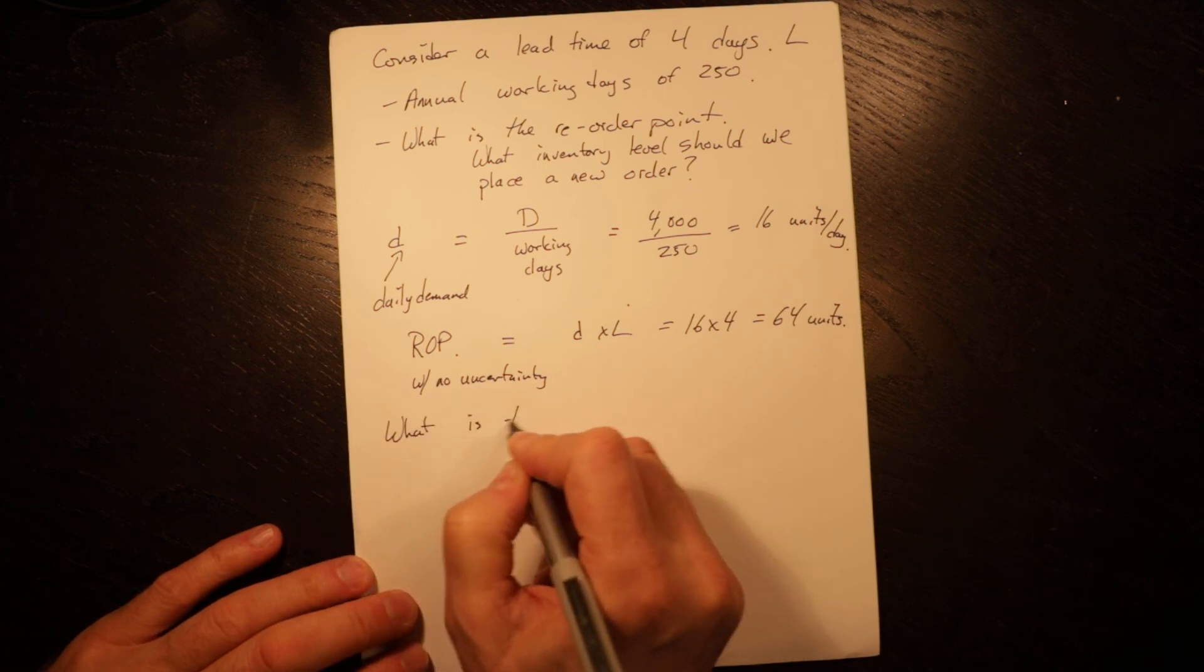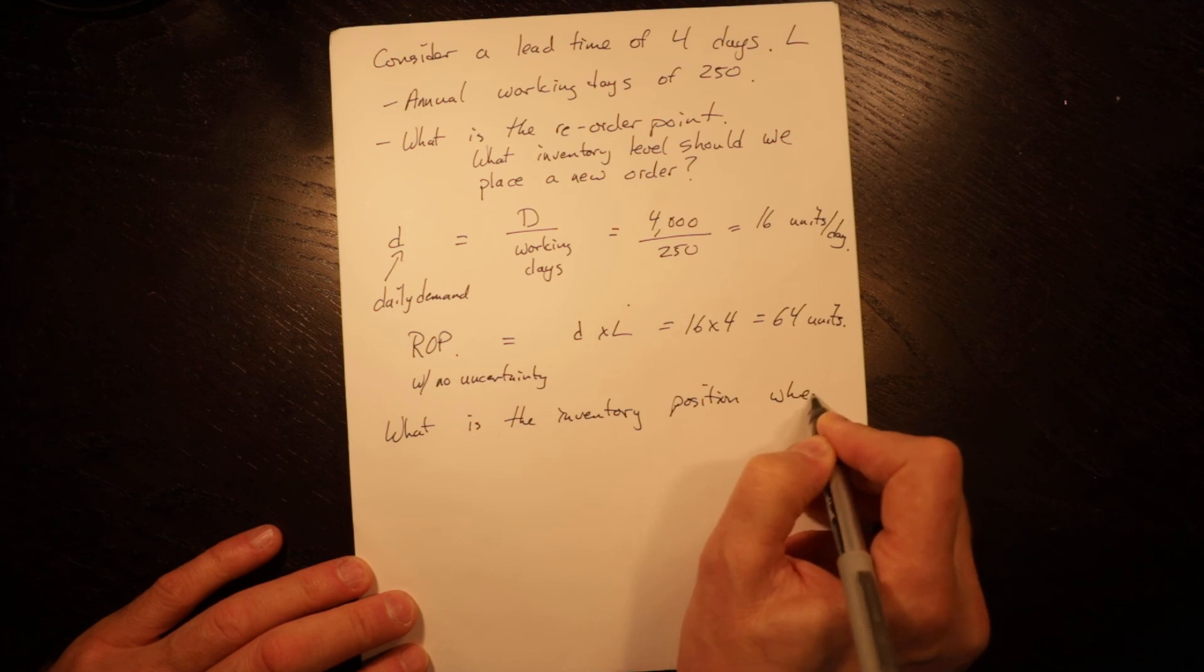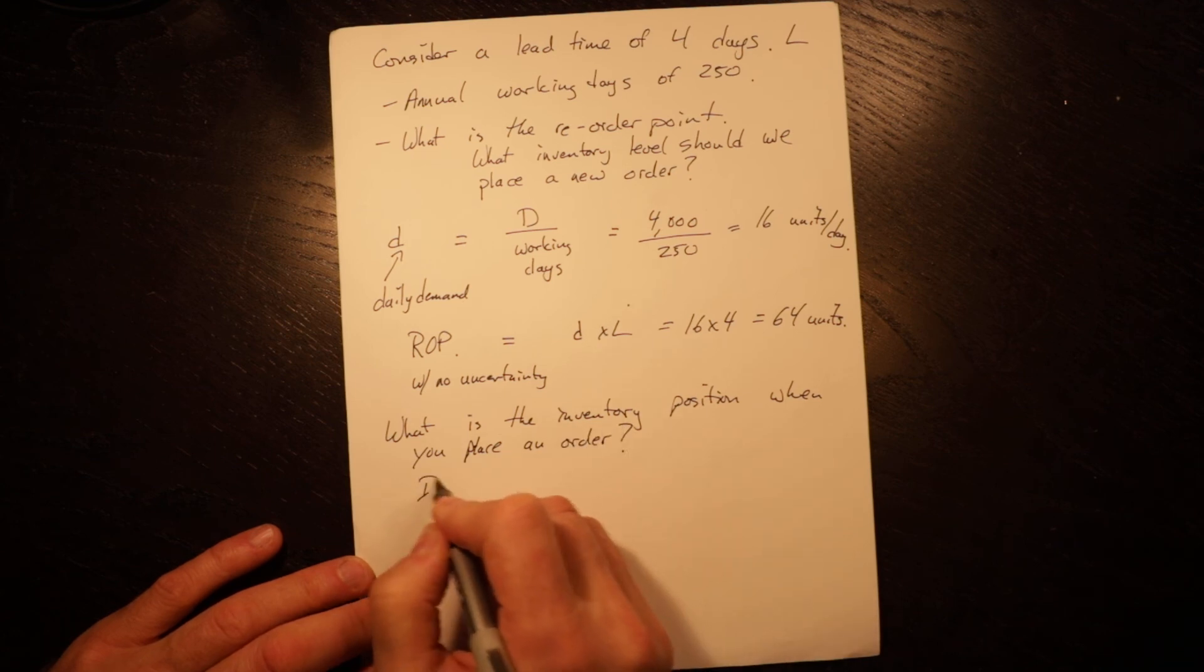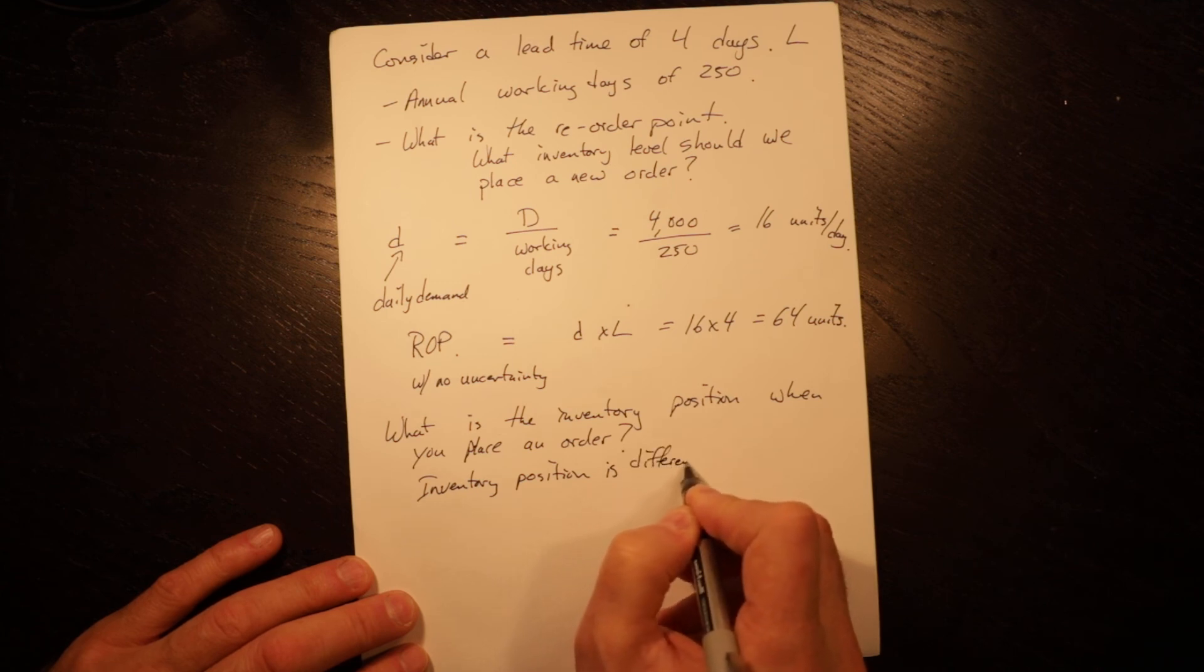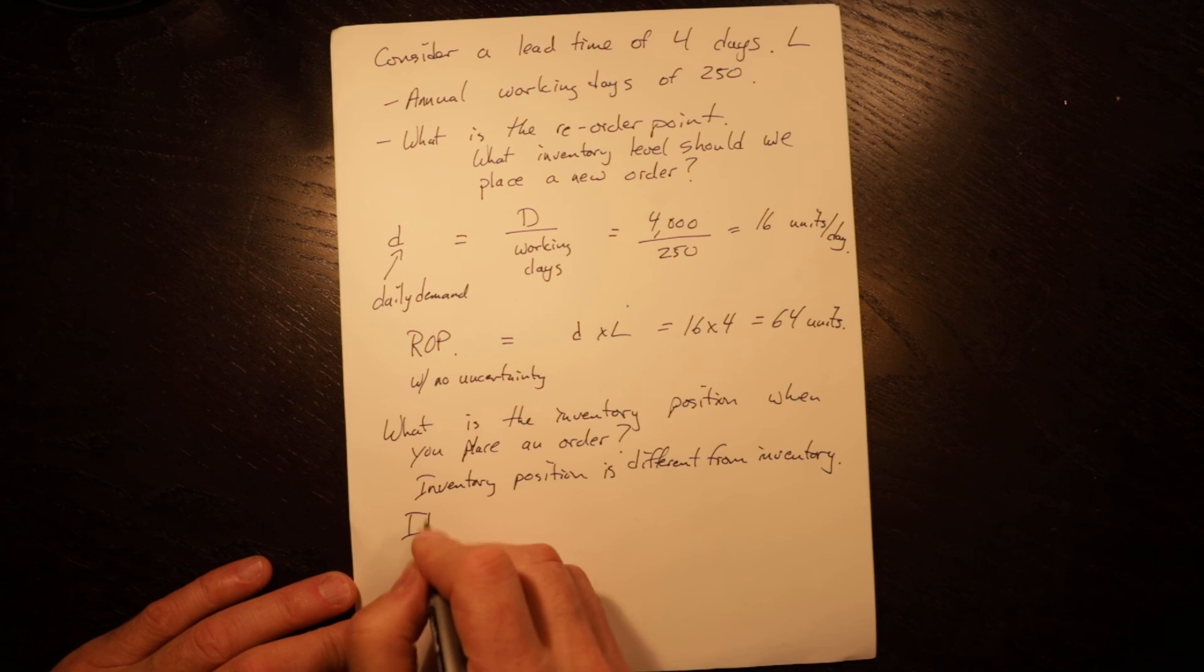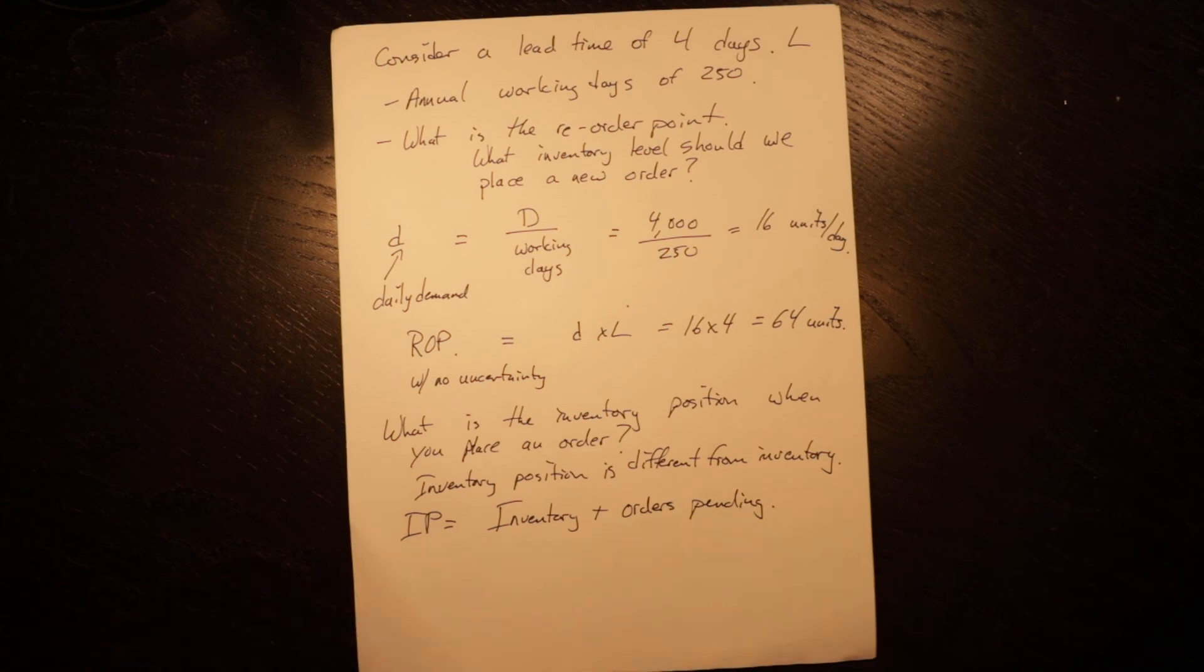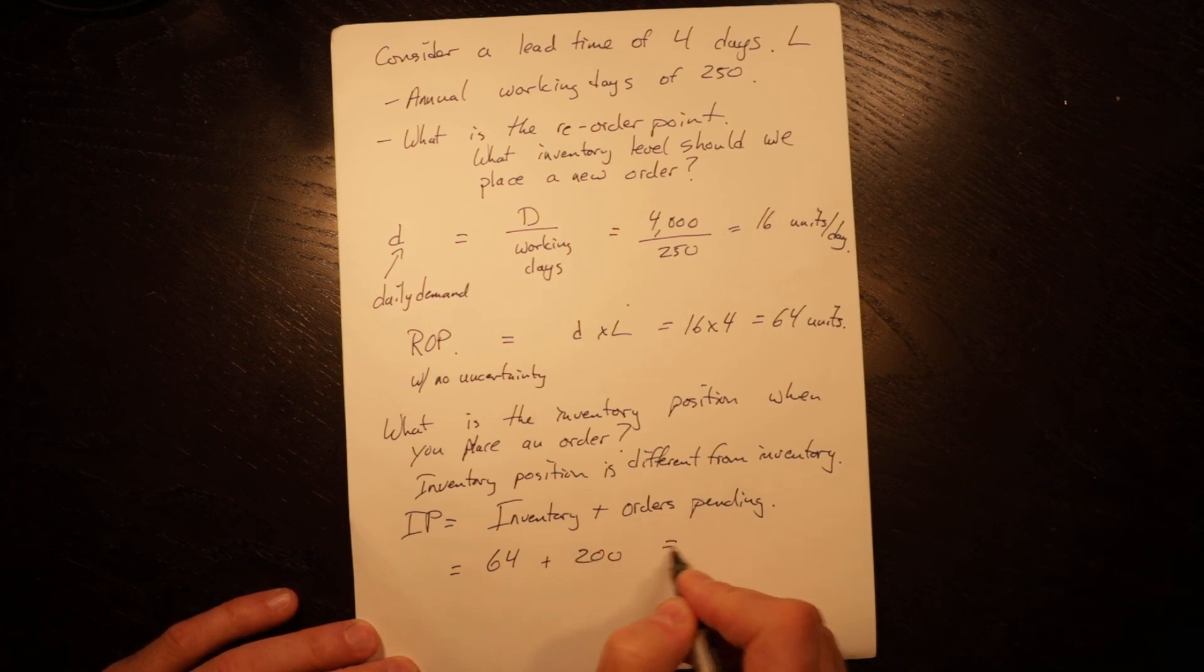This isn't in the textbook. What is the inventory position when you place an order? Inventory position is different. Inventory position equals inventory plus orders pending, so orders that you've placed but that have not arrived yet. In this case, it would be 64 plus 200, which is the quantity you've ordered, equals 264.